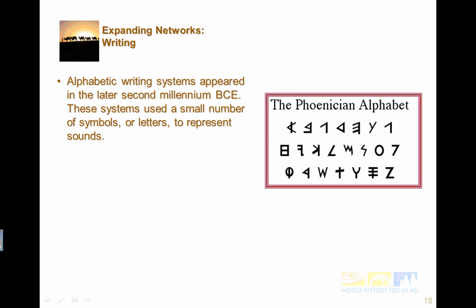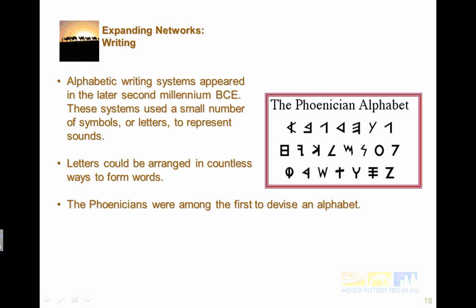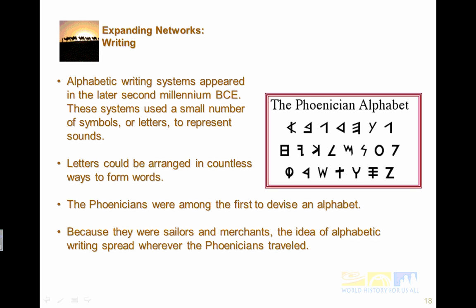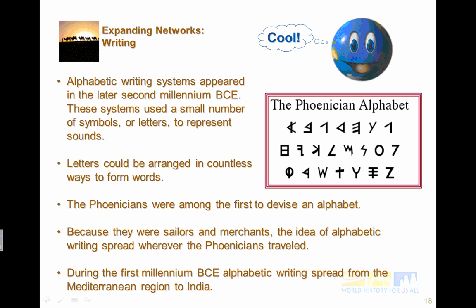Writing also really helped connect these networks. Alphabetic writing systems appeared in the later second millennium BCE. These systems used small numbers of symbols or letters to represent sounds, and these letters could be arranged countless ways to form words. The Phoenicians were among the first to create this alphabet, and because they were sailors and merchants, they brought those alphabets with them when they traded — that idea spread wherever they went. During the first thousand years of BCE, alphabetic writing spread from the Mediterranean region to India.